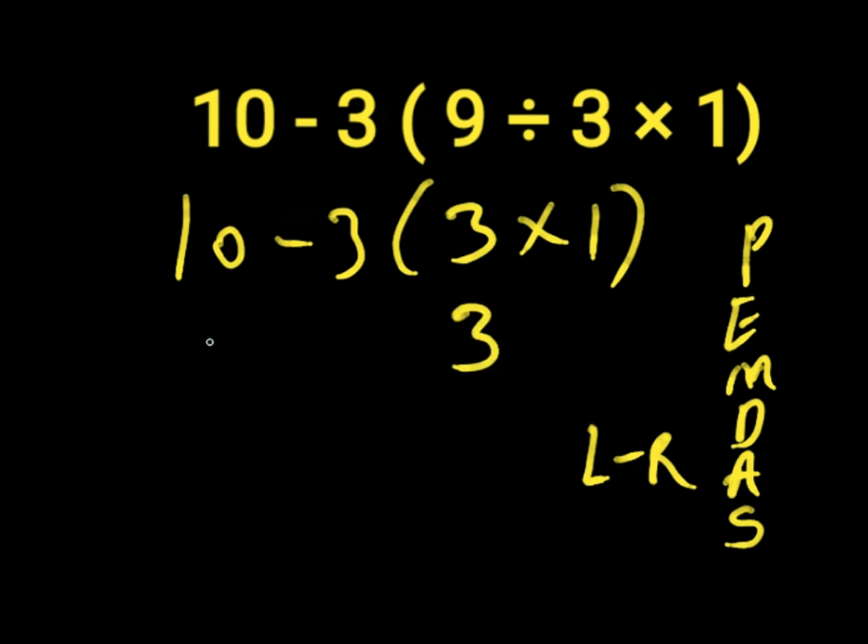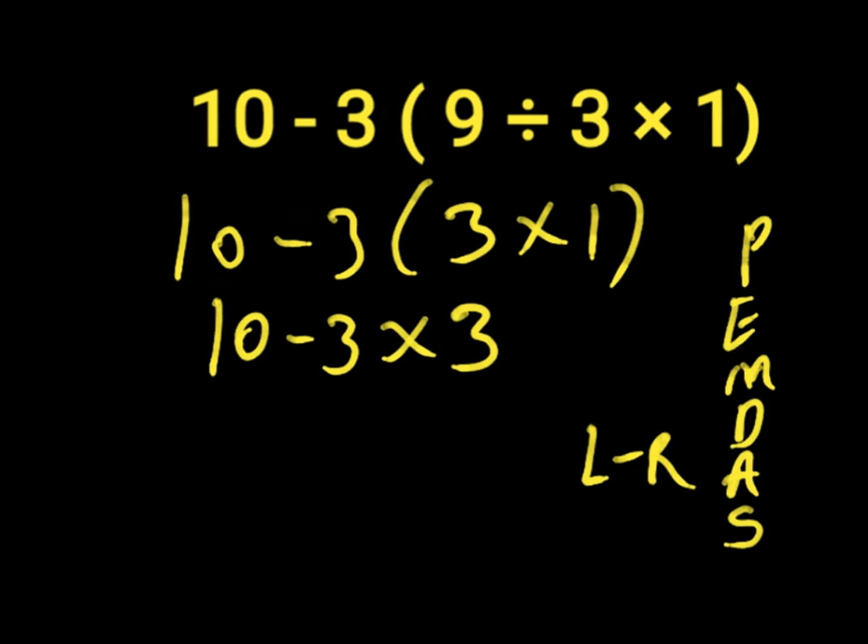Then we have 10 minus 3 times 3. Remember, if a number is close to a parenthesis, note that there's a multiplication sign in between. So 3 times 3 will give us 9. Then 10 minus 9 will give us 1. So 1 is the right answer to this expression.